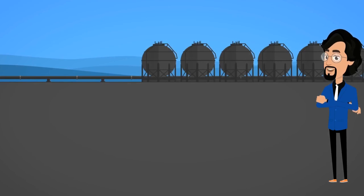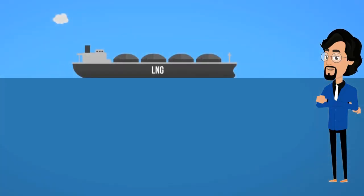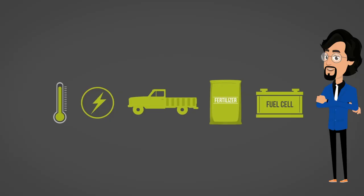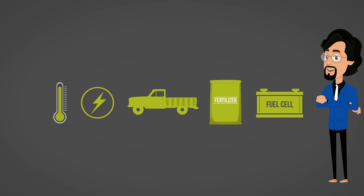In some cases, gas is further liquefied for shipping in large tankers across oceans — this is called liquefied natural gas (LNG). Natural gas is mostly used for domestic or industrial heating and to generate electricity. It can also be compressed and used to fuel vehicles, and as a feedstock for fertilizers, hydrogen fuel cells, and other chemical processes.